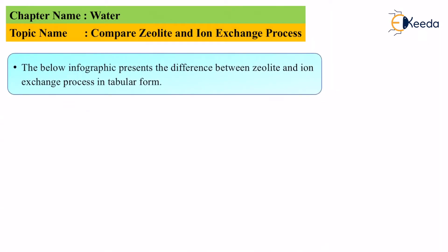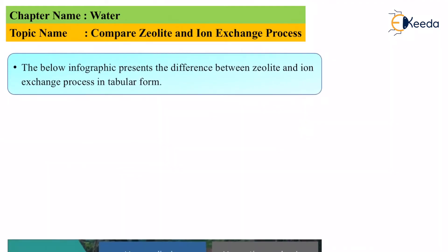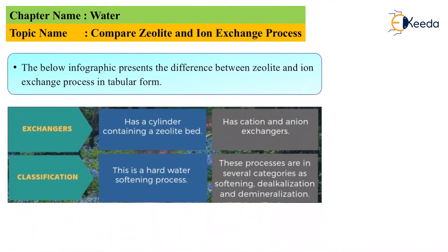The below infographic presents the difference between the zeolite and the ion exchange process. First, let us see the definition: the zeolite process is a process of softening hard water via ion exchange technique using the chemical compound zeolite. The ion exchange process is a water softening process in which cations or anions are used to soften the water. Regarding the ions involved: the zeolite process uses sodium ions that can exchange with calcium and magnesium in hard water, while the ion exchange process involves sodium ions, hydrogen ions, chloride ions, and hydroxyl ions (OH⁻) that can exchange with calcium and magnesium ions in the hard water.